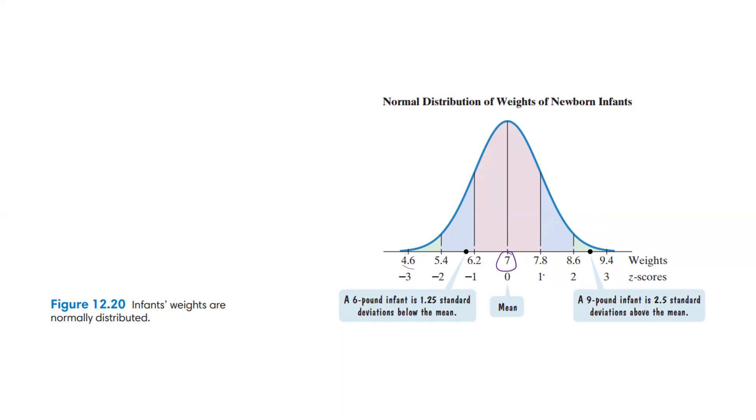Now go in the other direction. For one standard deviation above, it's 7.8. Two standard deviations above, or a z-score of 2, is 8.6. And 9.4 is a z-score of 3, or three standard deviations above.